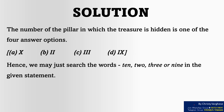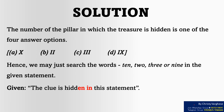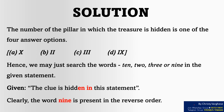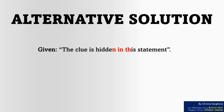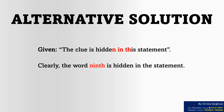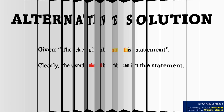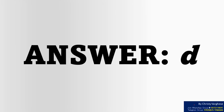Given that the clue is hidden in this statement, clearly the word 9 is present in the reverse order. Alternatively, it is given that the clue is hidden in this statement — clearly the word 9 is hidden in the statement. Hence, option D is the right answer to the question.